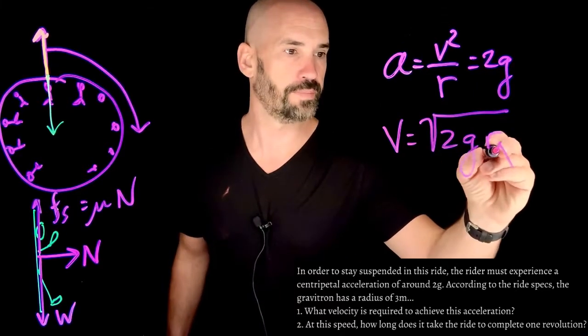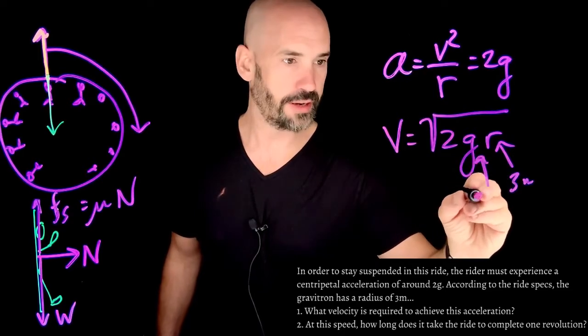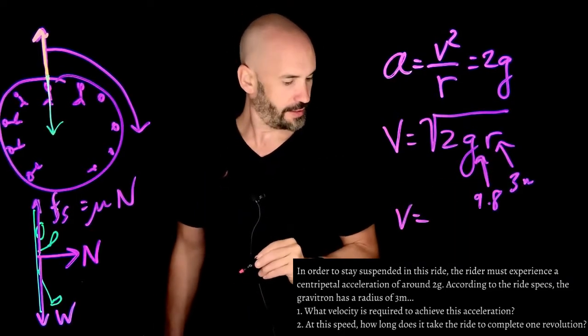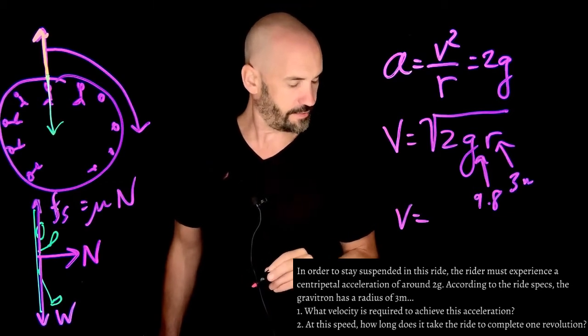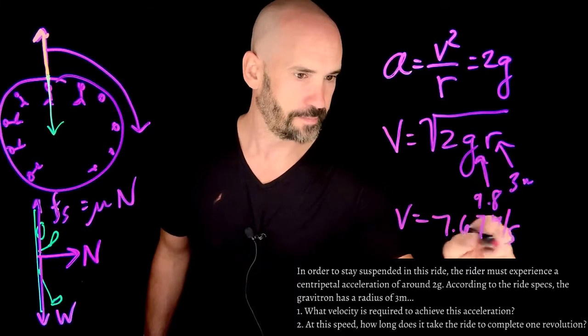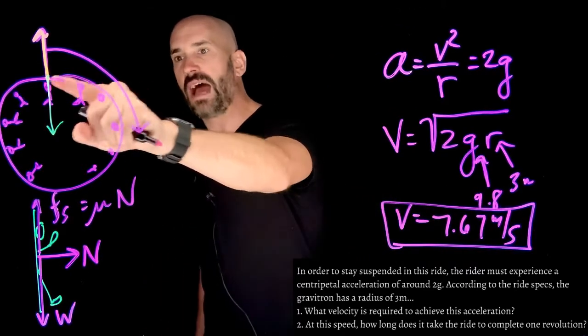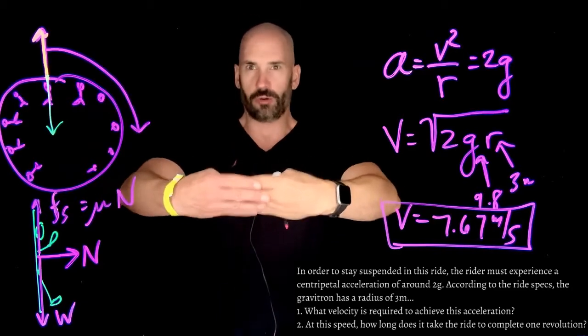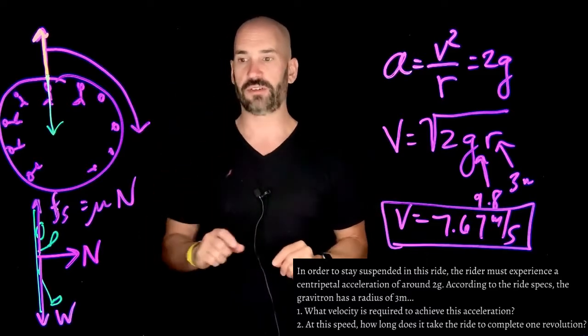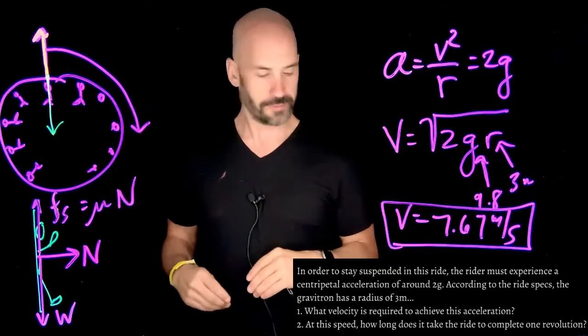So 3 goes in here. What's gravity? 9.8, obviously. And by my calculations, if I put all that in, I get a value of 7.67 meters per second. So as long as any point on the outside of the cylinder of the UFO or the gravitron ride is spinning at 7.67 meters per second or faster, that should be enough to hold the average person up.